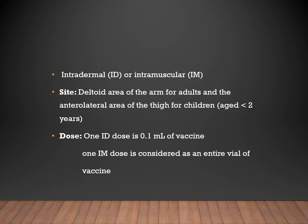The vaccine can be given by two routes: intradermal or intramuscular. For intramuscular injection, the deltoid area is preferred in adults and children. The gluteal region is avoided because the high fat content can hamper the vaccine's effect. For the intradermal route, 0.1 ml of vaccine is sufficient; for intramuscular, the whole vial is used.